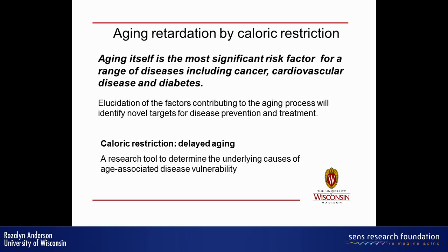Notwithstanding the fact that there are genomic, pharmaceutical, and nutraceutical interventions that extend lifespan, fewer are as robust as CR. The idea is that if we can understand how CR is intervening — how it changes the rate of aging and prevents this age-related increase in disease vulnerability, separating the aging from the chronological process — then we can learn about aging itself and about the etiology of disease vulnerability as a function of age. CR is really a research tool to determine the underlying causes of aging-related disease vulnerability.